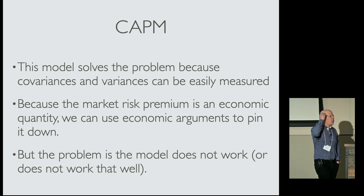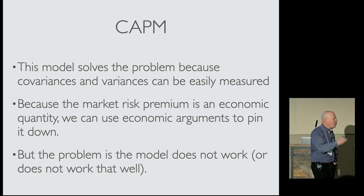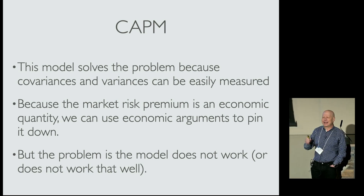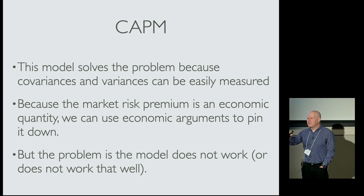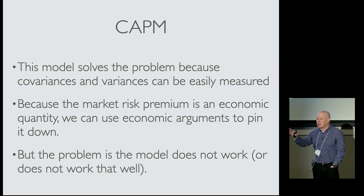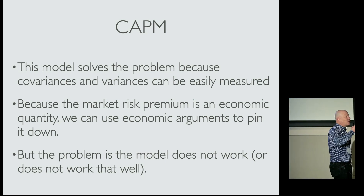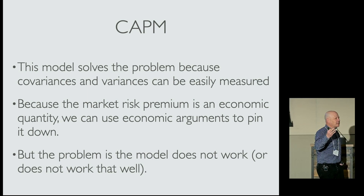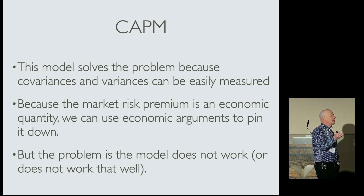The CAPM was a huge step forward because it allowed us to estimate the cost of capital. Why? Because we only need to know betas. Betas are variances — we can estimate variances. The only parameter left to estimate is the risk premium of the market. The risk premium of the market is much easier to estimate than the expected return of a stock. It's a portfolio, so there's much less noise. And you might suppose the risk premium is constant in time, so if you have 100 years of data you can estimate it.